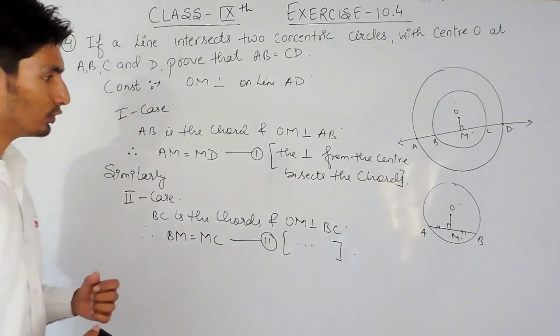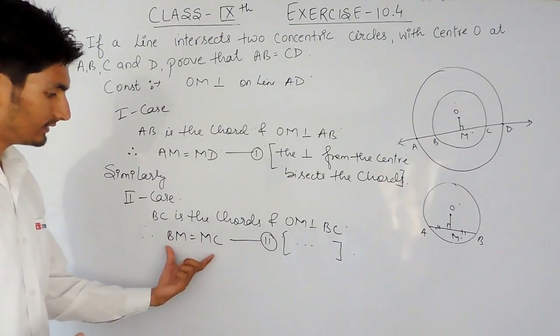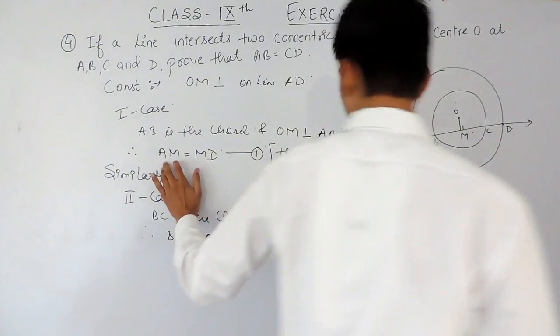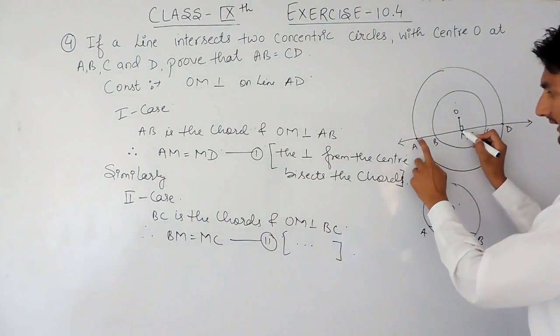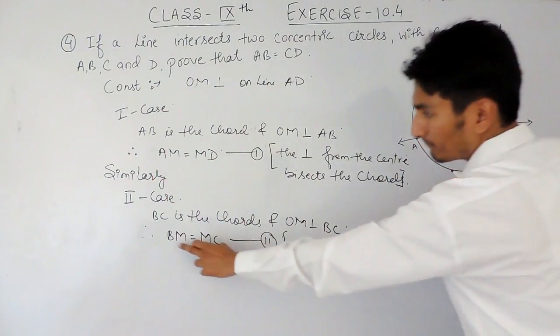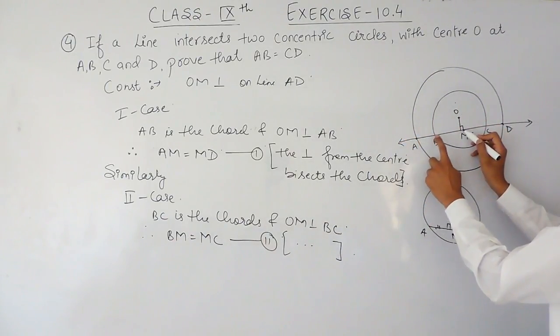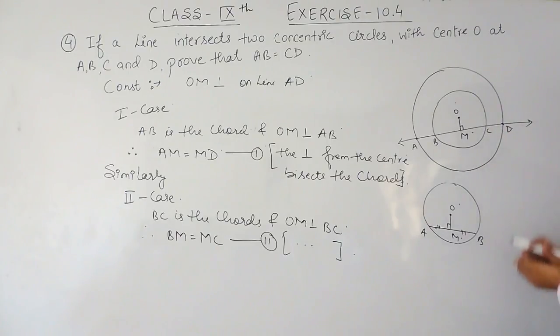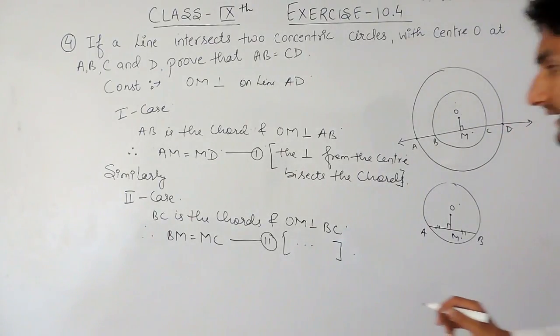Now, what we have to do is, we have to subtract this from this. This is AM. So, from AM, if I subtract BM, the remaining will be AB. Similarly, from MD, if I subtract MC, the remaining will be CD.